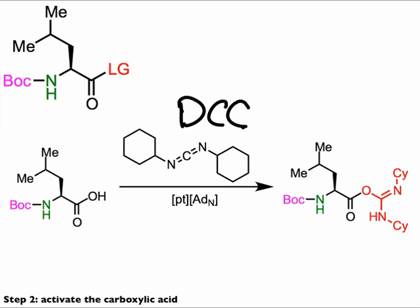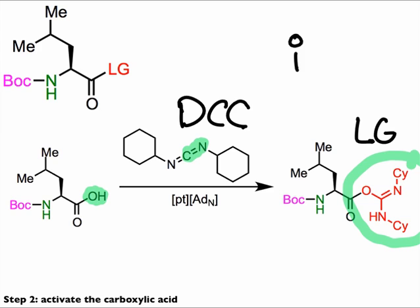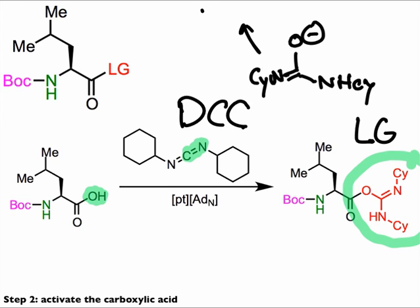When treated with DCC, the carboxylate acts as a nucleophile towards the electrophilic protonated C=N double bond. After nucleophilic attack, a neutral product results, which now possesses a good leaving group where the hydroxyl group used to be. To see that this is a good leaving group, imagine cleaving the C–O bond and giving the electrons to oxygen. The result is a resonance-stabilized anion, which when protonated leads to a neutral molecule of dicyclohexylurea.